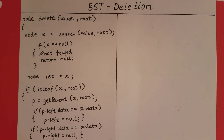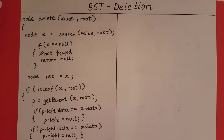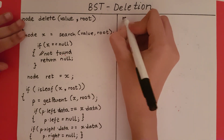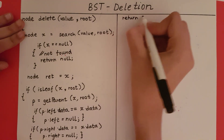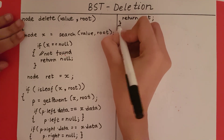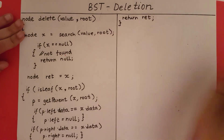With that we finish our checks for when x is a leaf node. We then need to return the node at which the value was found, which we have already stored in ret. So here we return ret, and we come to the end of the leaf node check.